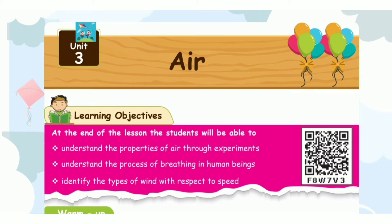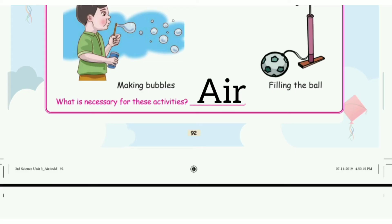In this video, the air lesson book inside answers are explained. First, page number 92: What is necessary for this activity? The answer is air.